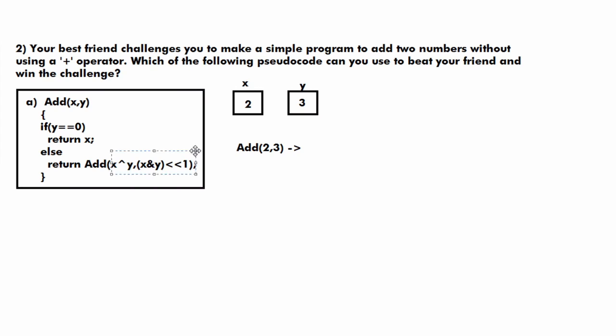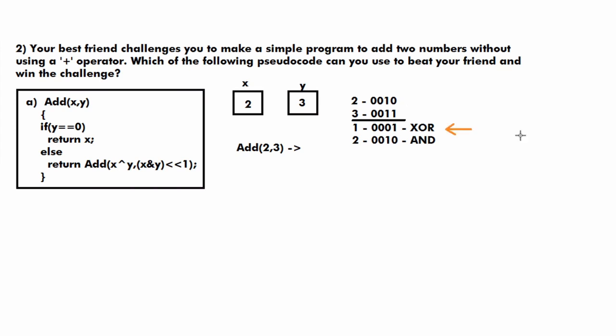We convert 2 and 3 to binary: 2 is 0010 and 3 is 0011. The first parameter computes x XOR y, giving 0001 which is 1 in decimal. The AND operation gives 2 in decimal, and left-shifting 2 gives 4. So the new recursive function call becomes add(1, 4), where x is now 1 and y is now 4.